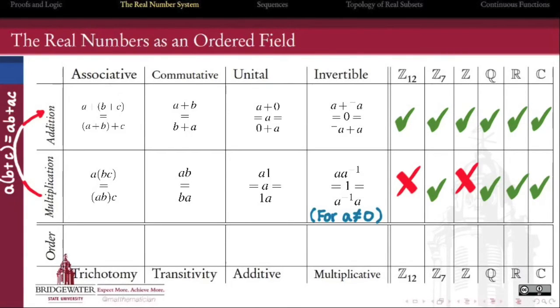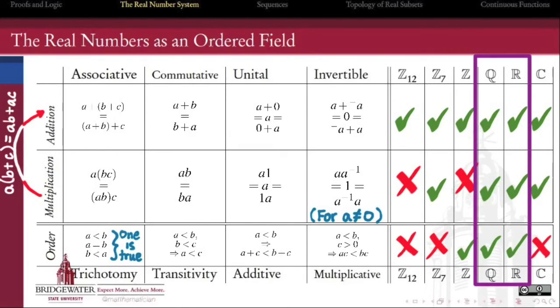Now the last thing that we need is a total ordering under which, for any pair of numbers a and b, exactly one of the statements 'a is less than b', 'a is equal to b', or 'b is less than a' is true. That's called the law of trichotomy.